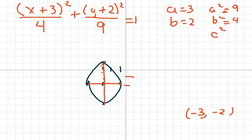So c squared is 9 minus 4, which is 5. I just subtract those two. So c is the square root of 5. And we know square root of 5 is in between the square root of 4 and the square root of 9.